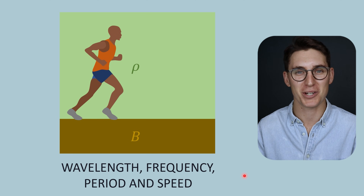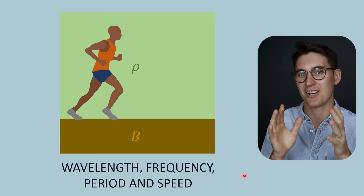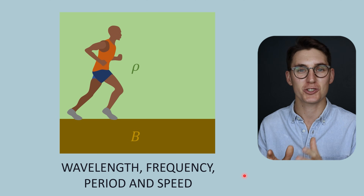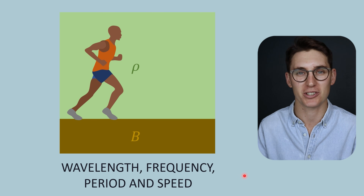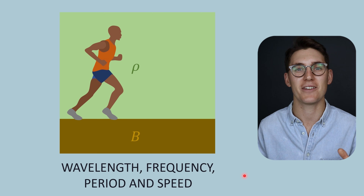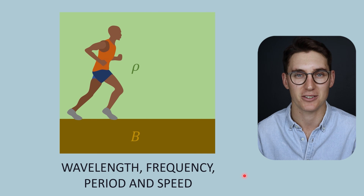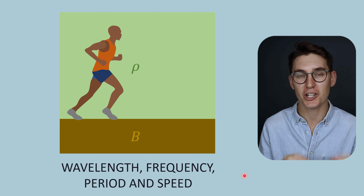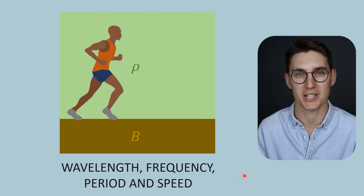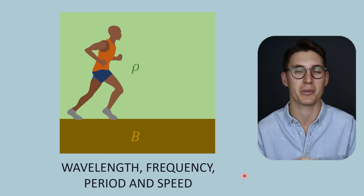Hello and welcome back. In the previous talk we looked at what exactly sound is, we compared sound to electromagnetic radiation, and then we looked at some parameters of sound: the wavelength, the frequency, and the speed of sound. Now in this talk we're going to look at wavelength and frequency in a little bit more depth and discuss a parameter known as the period.